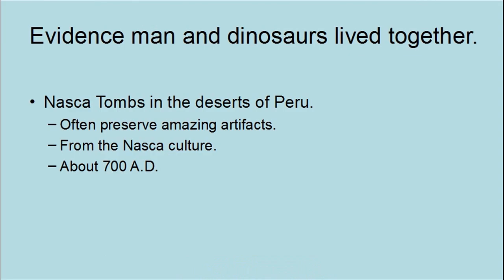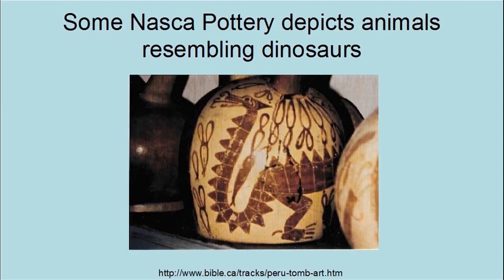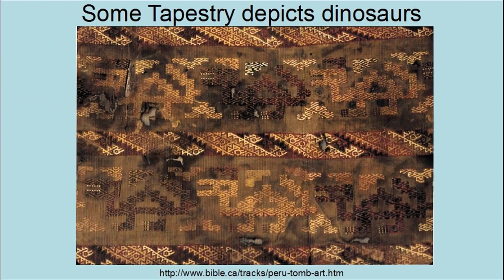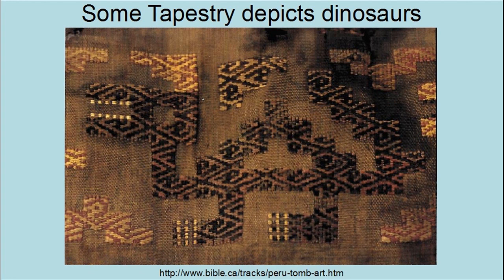It turns out that there is evidence that man and dinosaurs lived together. Some of this evidence can be found in the Nazca tombs in the deserts of Peru. These tombs often preserve amazing artifacts of the Nazca culture, which dates to about 700 AD. This includes pottery that depicts an animal resembling a dinosaur, and tapestry depicting living dinosaurs, indicating that the ancient Peruvians saw them.